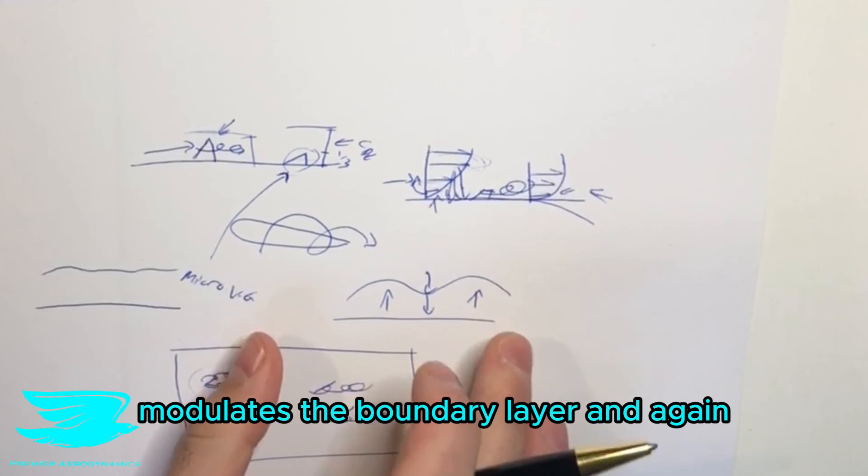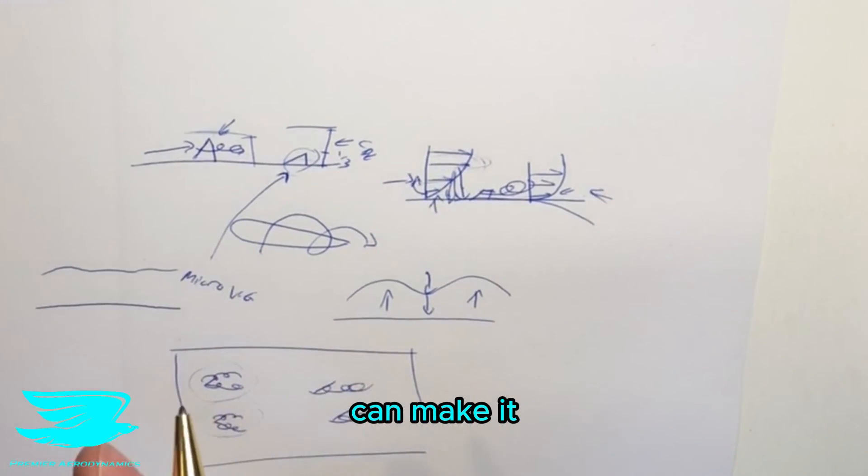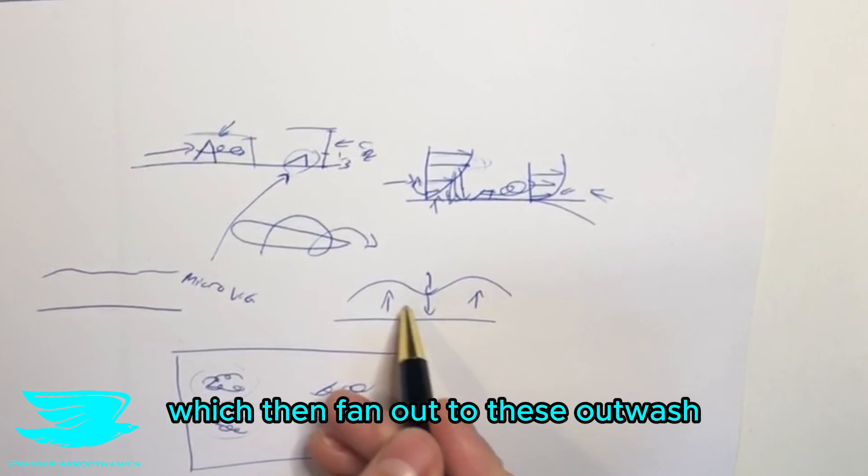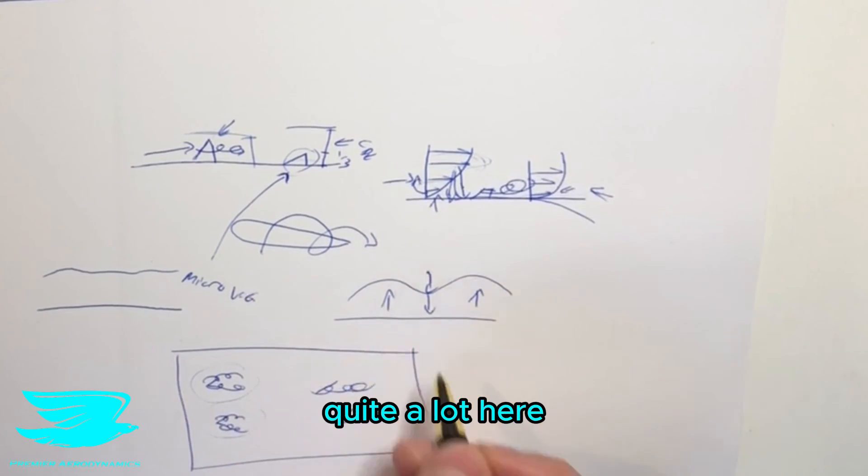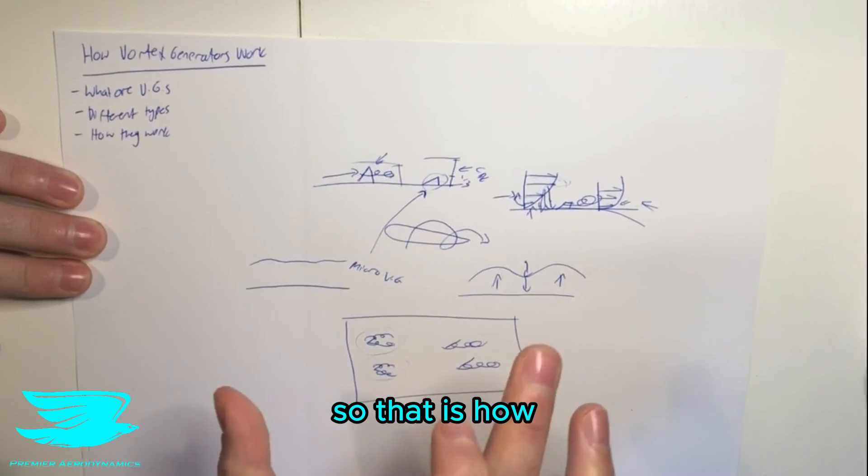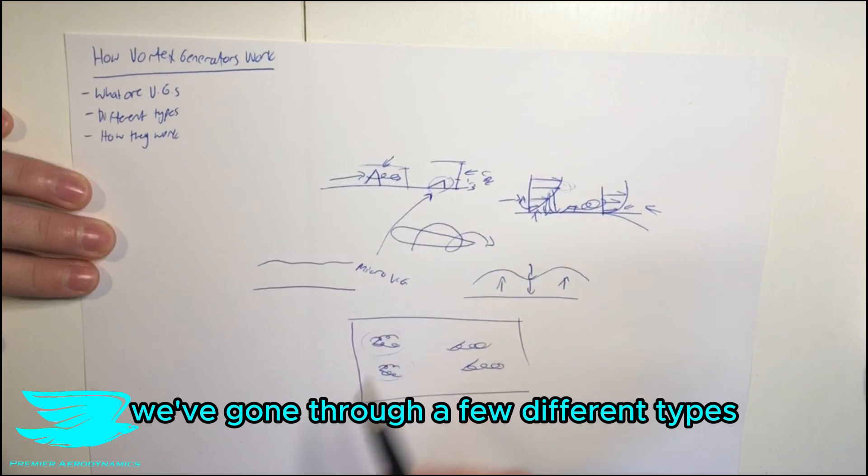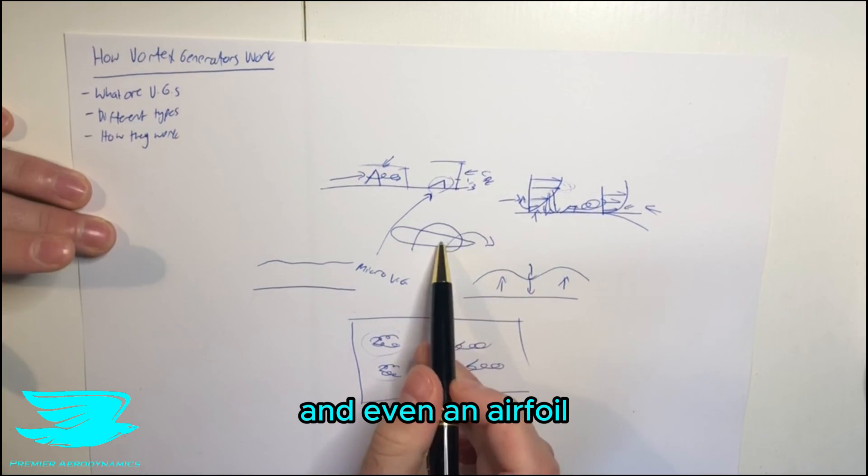So again, this modulates the boundary layer and again can make it resist the separation a lot better in these regions, which then fan out to these outwash regions and then help that stay attached as well. Also, they affect the skin friction drag quite a lot here. So that is how vortices work. We've gone through a few different types and how they work and even an airfoil.